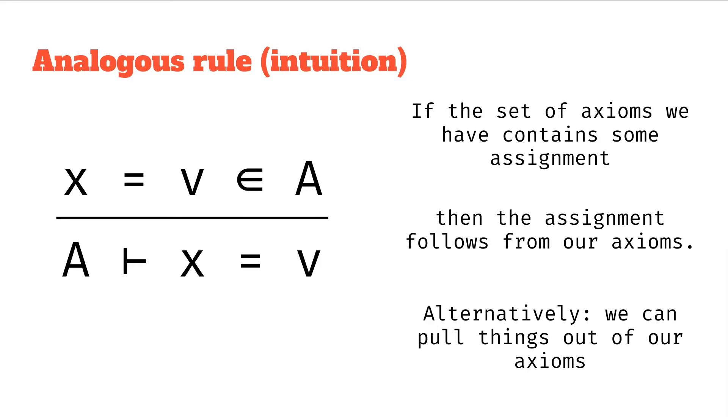Again, thinking about the intuition that I gave for the variable typing rule, rephrasing it in that way, if the set of axioms we have contains some assignment, so capital A contains x equals v, then the assignment follows from our axioms.